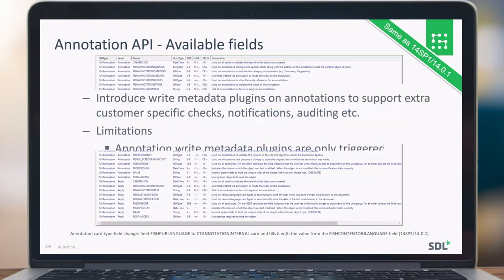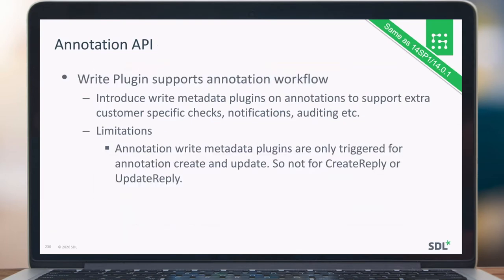For the annotation API, it also works with the complete plugin mechanism we have. So if you want to write some extra logic or intercept writing an annotation or updating it, you can actually hook into this and write your custom code — for example for auditing or sending out a notification to another system. There are some limitations: it's only triggered for creating and updating annotations. For create reply or update reply, there's no support for hooking into those events in the write plugin mechanism.